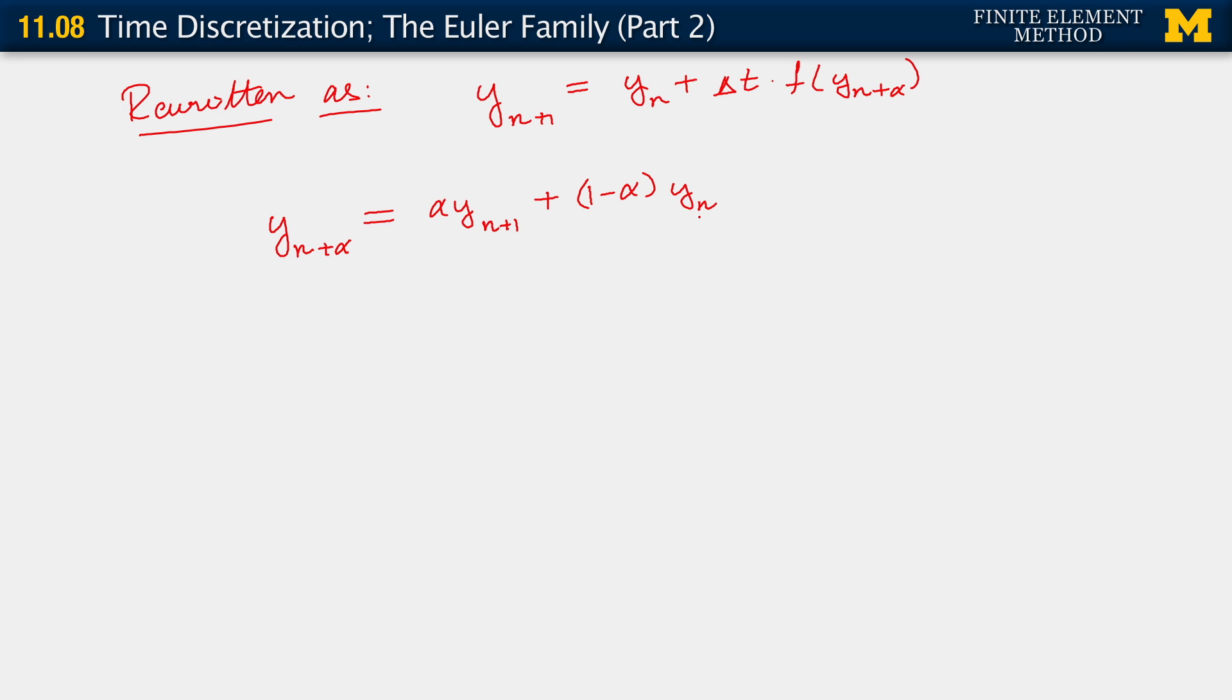So really when you sit back and look at this Euler family of algorithms, what it is doing is to approximate our time derivative. So we approximate the time derivative as a linearly varying quantity over every time interval. Instead of saying y dot, we're just saying, let me just take a linear approximation of it over the time step or over the time interval. So this is our approximation for the time derivative.